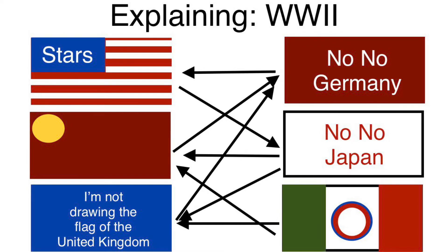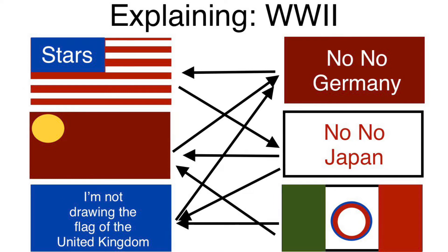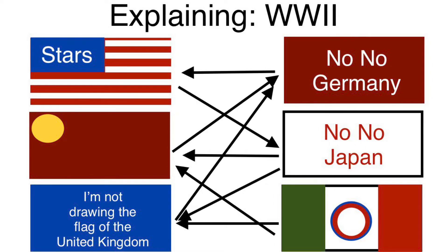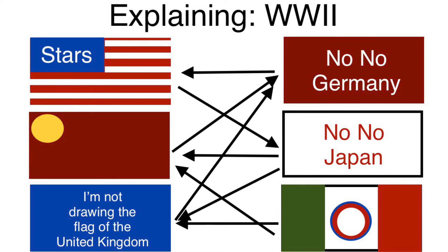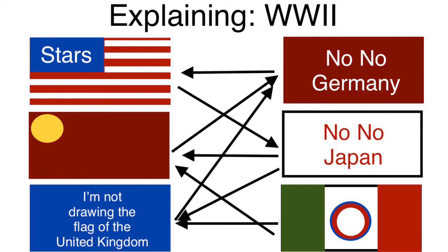The fighting would continue, and things seemed almost hopeless. Germany and Italy were making gains inside of Europe, meanwhile Japan was making great gains inside of Eastern Asia.